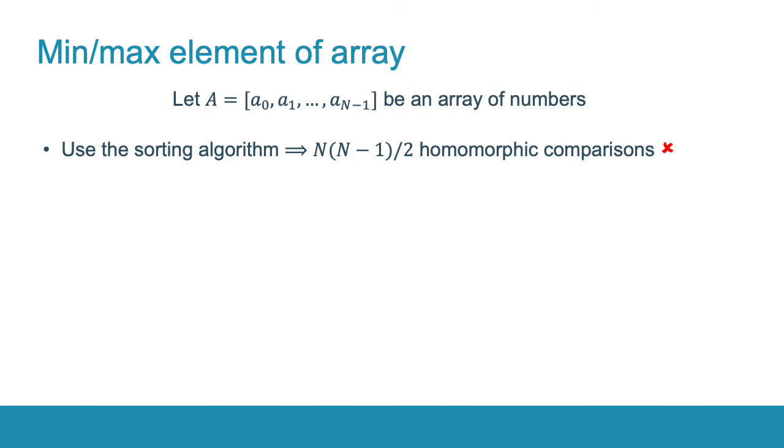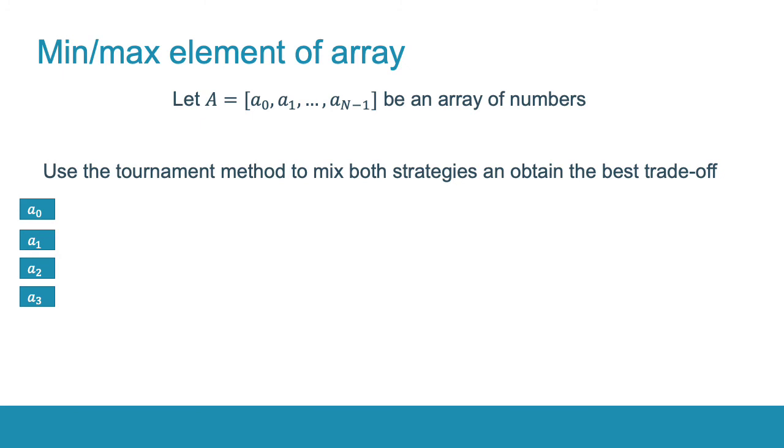Another application of our circuits is the minimum-maximum element of an array. To compute the minimum element, we could use the sorting algorithm, but this requires a quadratic number of comparisons in the number of elements. Another way is to perform N-1 successive pairwise comparisons using the tournament method. But in this case, the depth will be practically big. As a result, we proposed a hybrid method by mixing two strategies.